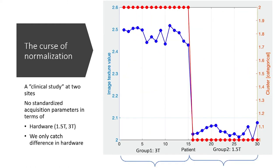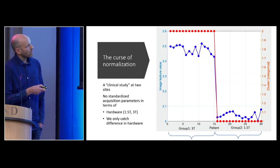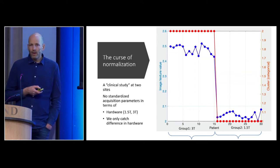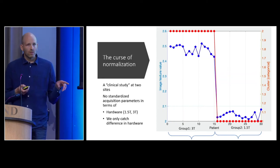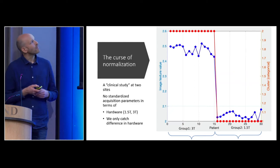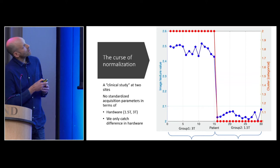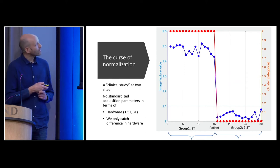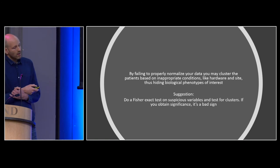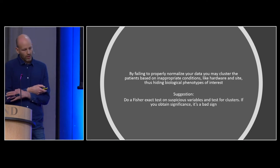For example, half the patients might be acquired on a 1.5 Tesla and half on a 3 Tesla scanner. From physics, we know there's an increase in signal at 3 Tesla, which is not biological — it's purely hardware. If we do clustering, it's purely based on hardware, which is not interesting to publish. By failing to properly normalize your data, you may cluster patients based on inappropriate conditions like hardware and site, hiding the important biological phenotypes of interest.